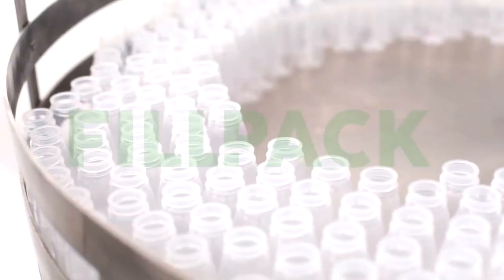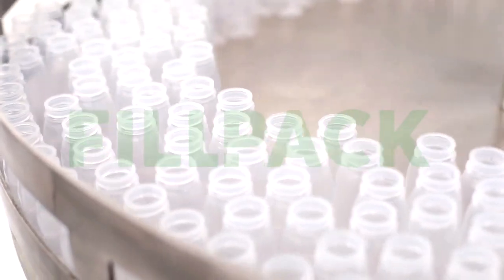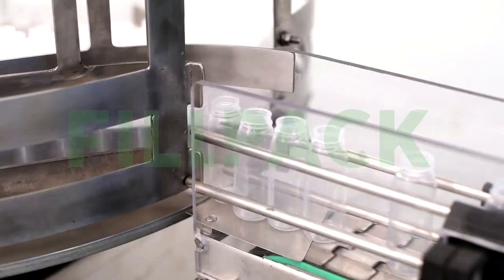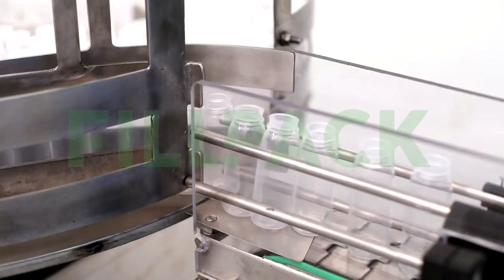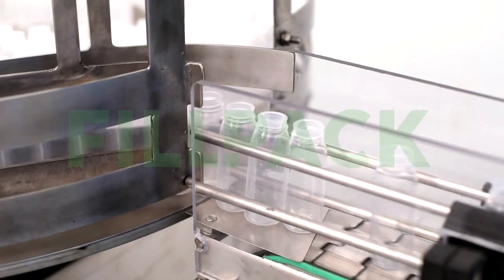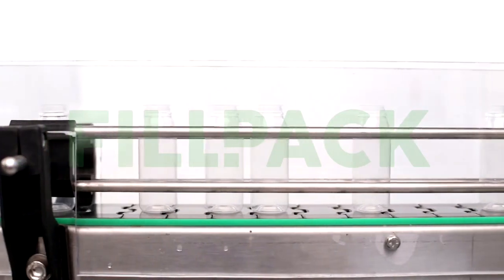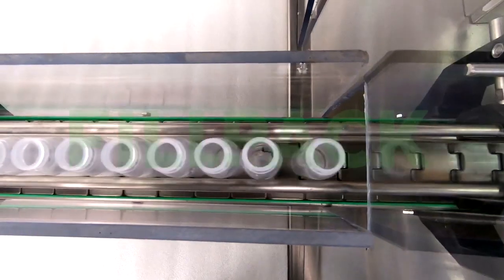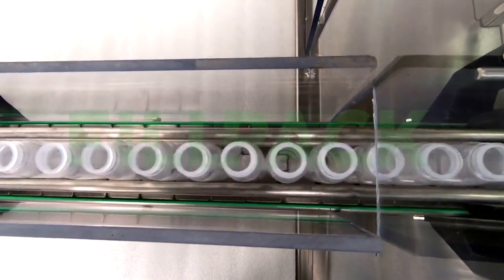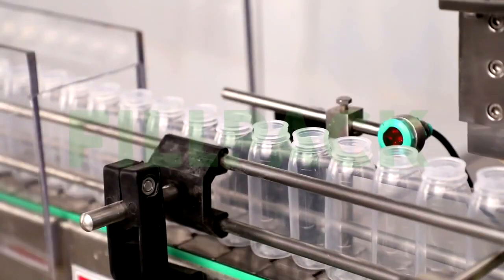Turntable: Bottles are loaded on the turntable to cover all the area of the table. The table rotates continuously and feeds the bottles on the conveyor line. Constant loading of bottles is required on the turntable to maintain the speed.